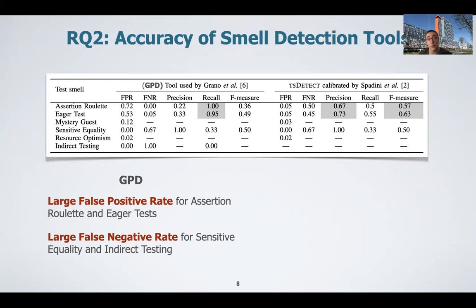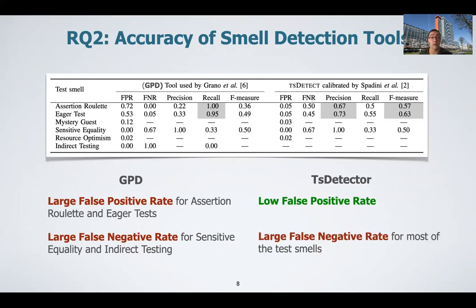Given our manually validated dataset, we could now answer research question two: what is the accuracy of the test smell detection tools? We considered two tools: the GPD tool used in the related work, and the TS-detect tool calibrated with the thresholds proposed by Spadini et al. at MSR 2020. As we can observe, GPD has very low performance — the F-measure is never above 0.50. It has a very large false positive rate, meaning that most of the warnings are false positives, and it is not capable of detecting the smells for sensitive equality and indirect testing. For the second tool, TS-detect, it has a much lower false positive rate. However, the false negative rate remains very large for most cases. This highlights that we need more research to have an accurate detection of test smells, at least in the context of automatically generated tests.